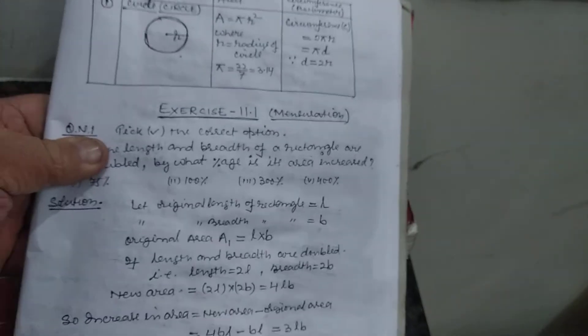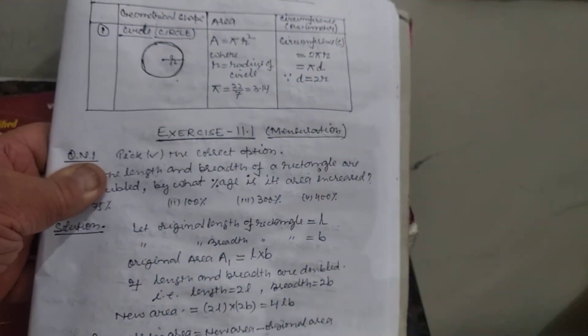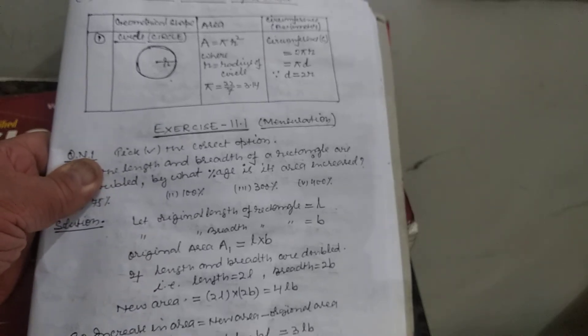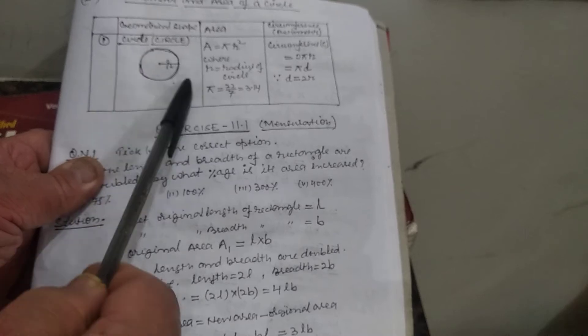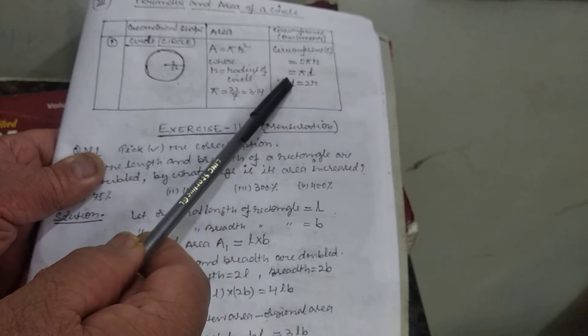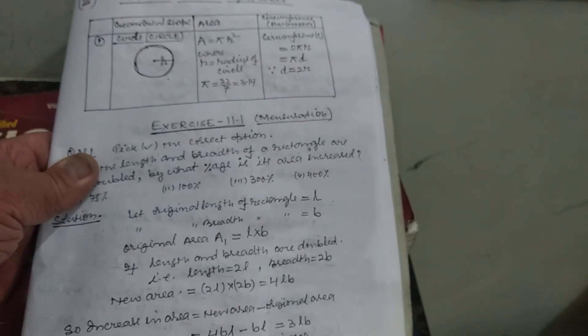Now there is another chart for the perimeter and area of a circle. The geometrical shape is a circle of radius R. Area of the circle equals π R², where π equals 22/7, that is 3.14. The circumference C of the circle equals 2πR, which also equals π × D, where D equals 2R — diameter equals 2 multiplied by radius.